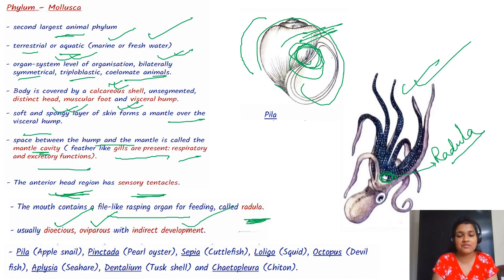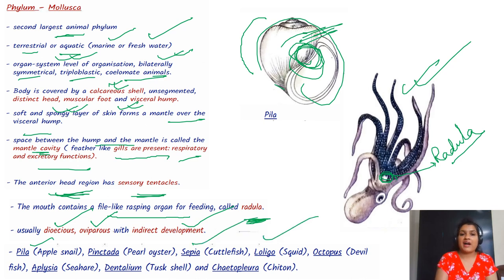Examples of phylum Mollusca include Pila, Sepia, and Loligo.